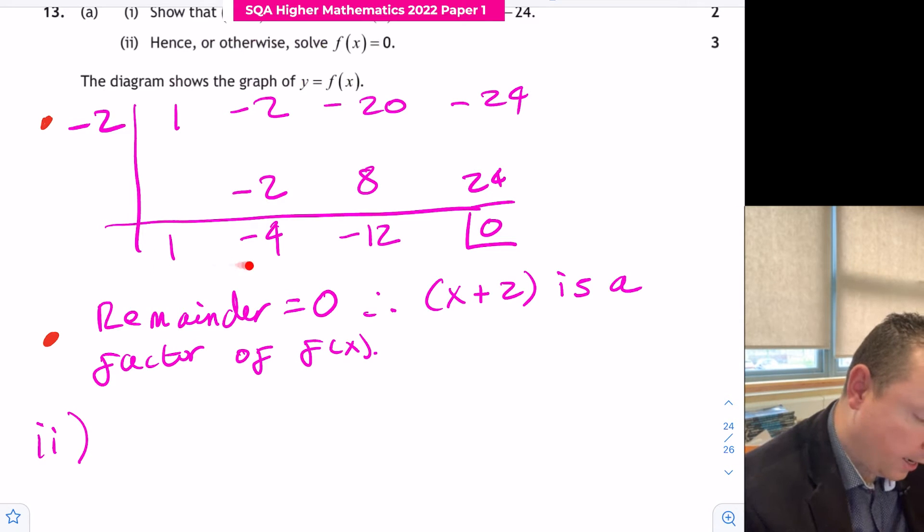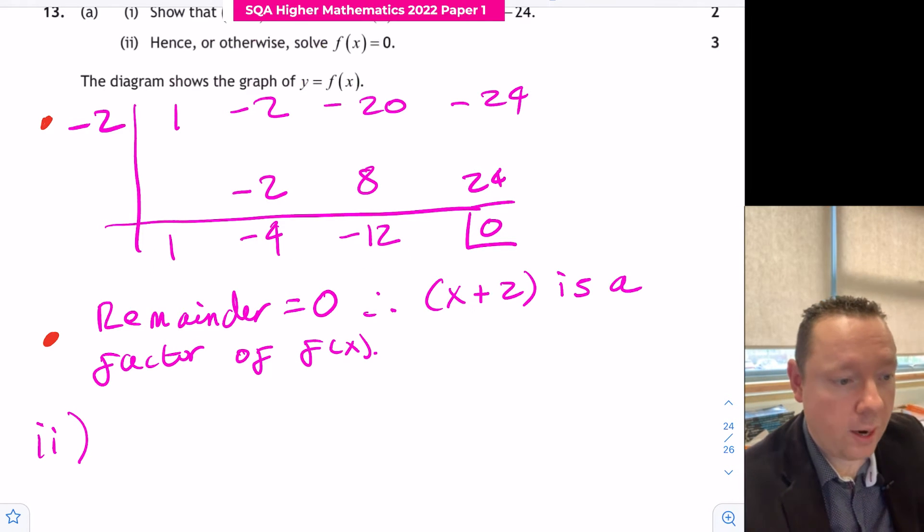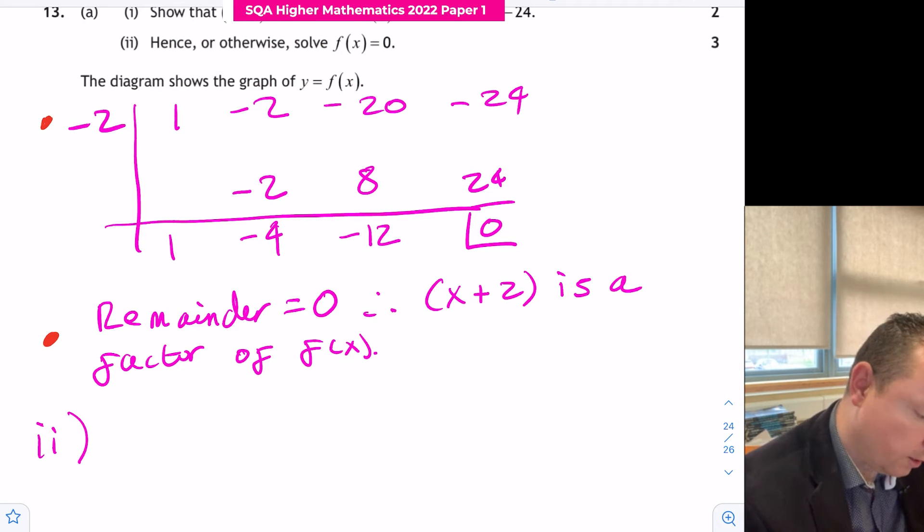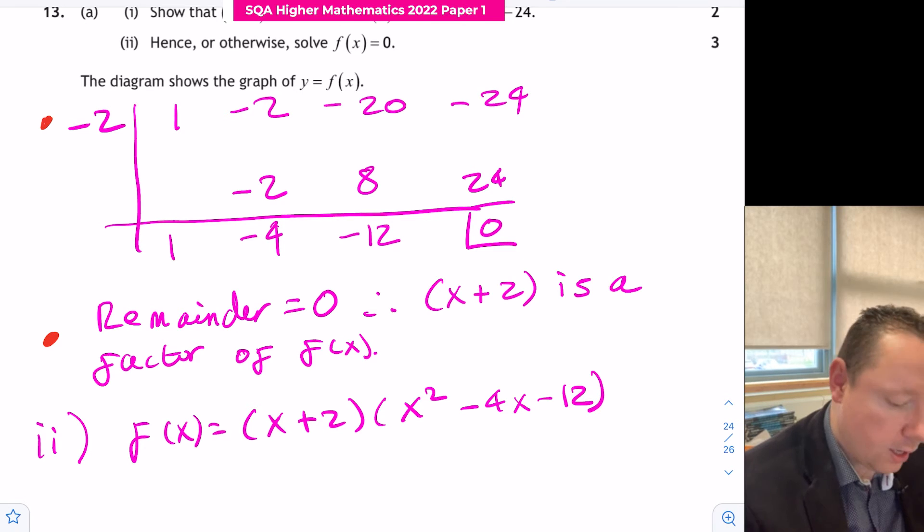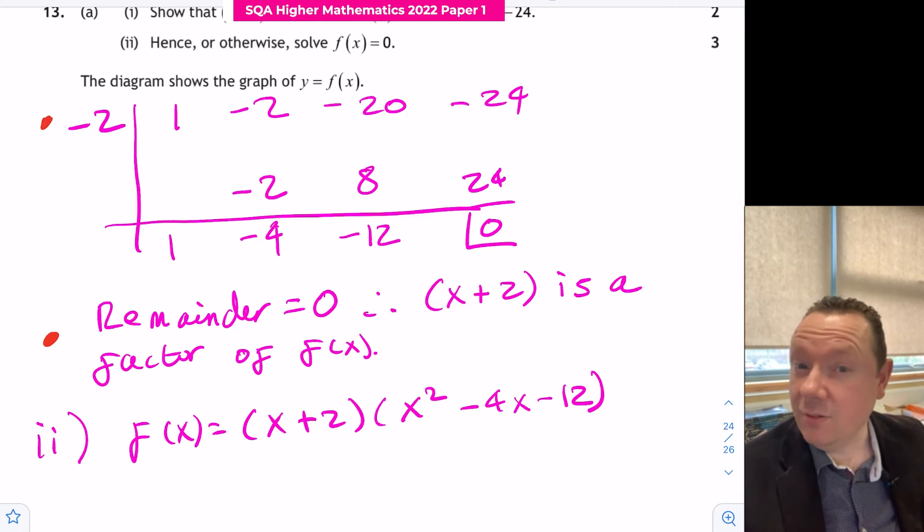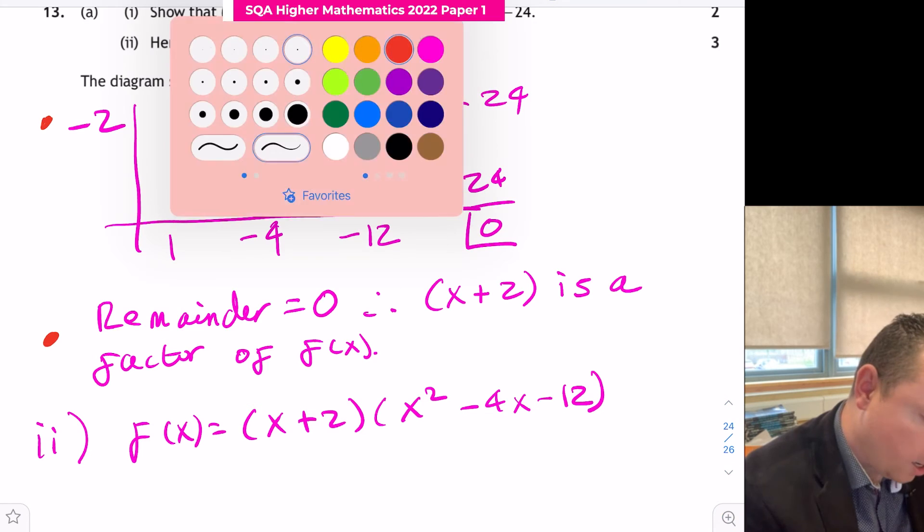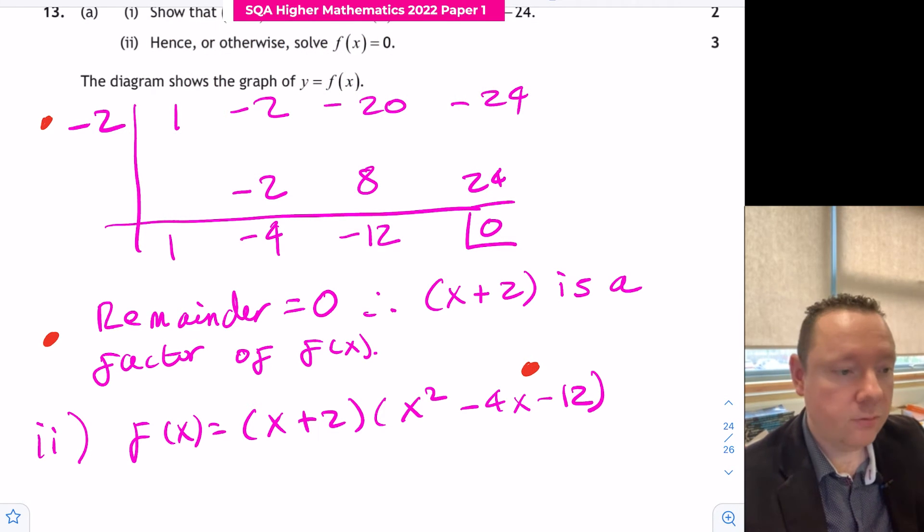For part two, we've got this whole bit: x squared minus 4x minus 12 is our factor. So we now know that x plus 2 is a factor. F of x equals x plus 2 times x squared minus 4x minus 12. If you had substituted minus 2 in, you'd either have to do synthetic division at this stage or polynomial division. Assuming we've done this, we get a mark for stating this point here.